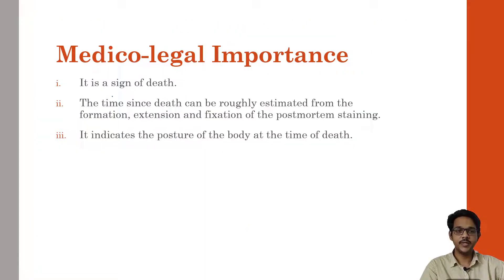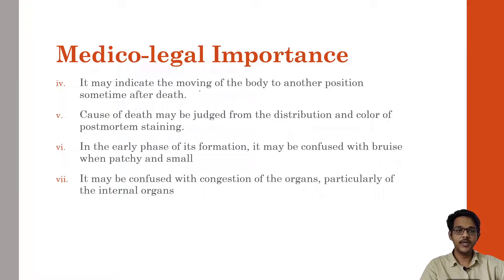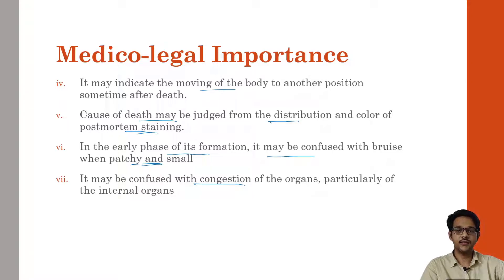Medicolegal importance of post-mortem staining: it is a surest sign of death. Time of death can be roughly estimated from the formation, extension and fixation. It also indicates the position of the body based on the distribution of staining. It may indicate moving of the body to another position. Poisoning cases like carbon monoxide show characteristic cherry-pink color. In the early phase, it may be confused with bruises when patching is small, or with congestion of organs. It can be differentiated by pressing or taking a cut section.